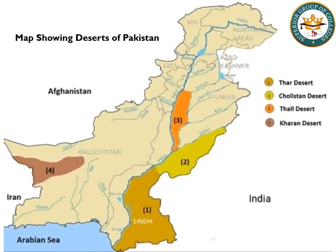If we look at Pakistan's deserts on the map, the map shows four deserts. The legend uses colors to represent which desert is shown in which color. The Thar Desert, Pakistan's largest desert in area, is in Sindh. Cholistan Desert is in the southern part of Punjab, and it merges with the Thar Desert on the southern side. The Thal Desert lies between the Jhelum and Indus rivers, near Pothohar. The fourth desert, Kharan, is in Balochistan.